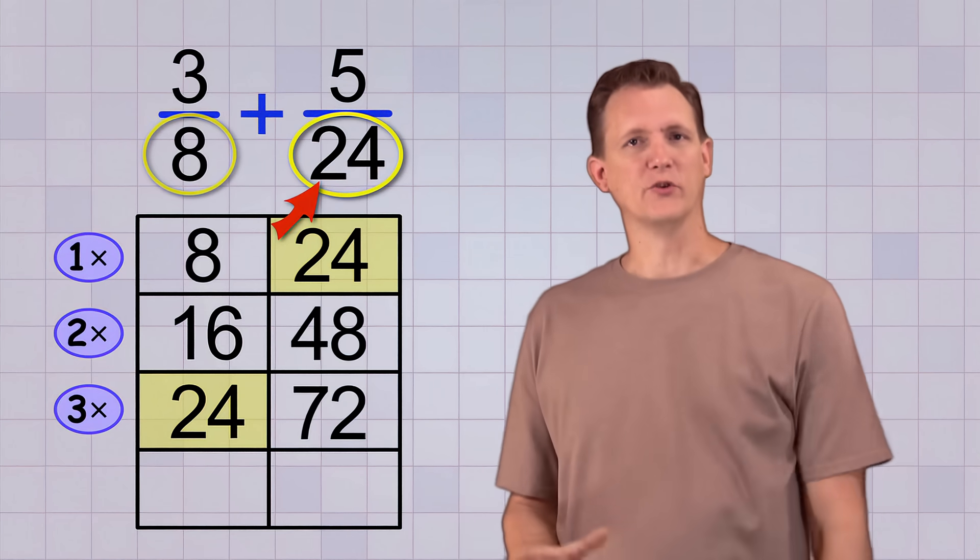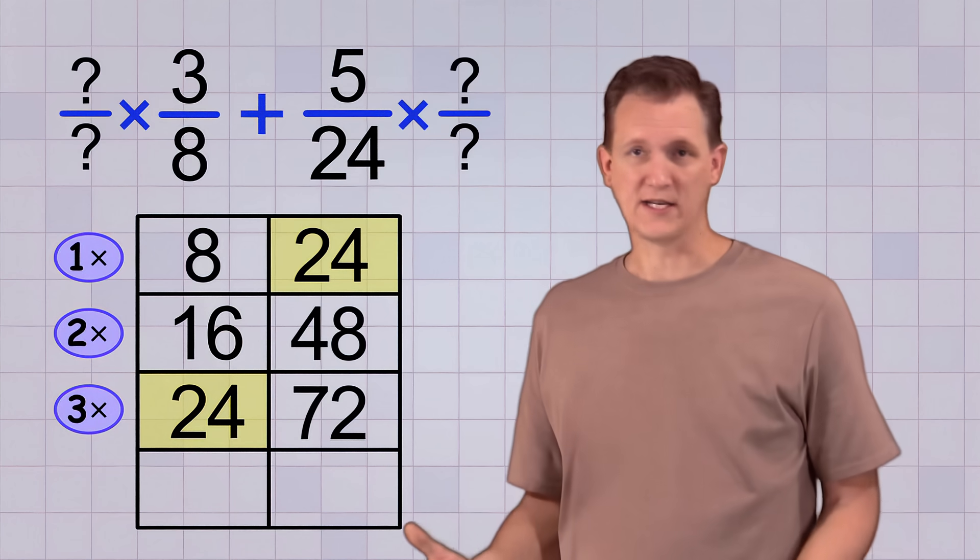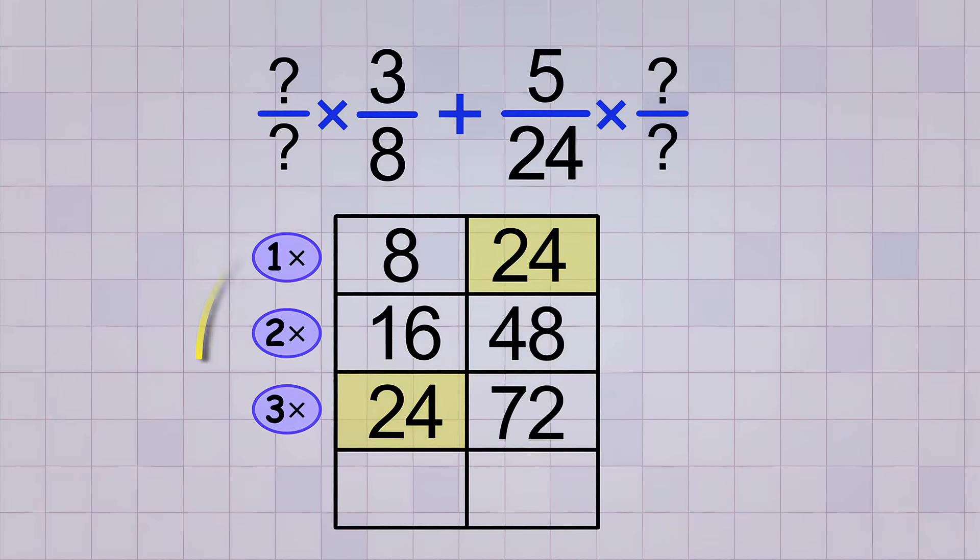So now we know we're going to use 24 as our common denominator. But what whole fractions do we need to get it? The answer lies in our multiples chart. To get our common multiple, we had to multiply our 8 by 3. So we're going to use the whole fraction 3 over 3 for our first fraction.